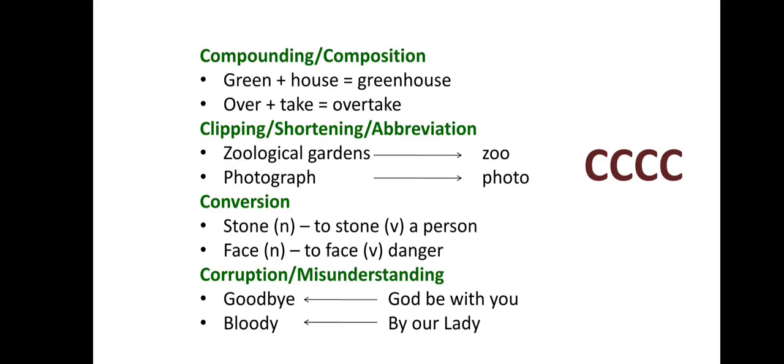The next one is Compounding or Composition. Compounding is the oldest process of word formation, in which two or more words are joined to form a new word. The meaning of the compound word is different from the meaning of its individual parts. For example, 'green' plus 'house' gives 'greenhouse' — whose meaning differs from 'green' and 'house' separately. Another example is 'over' plus 'take' giving 'overtake.'